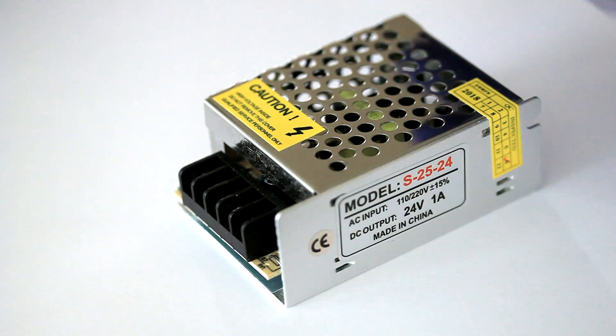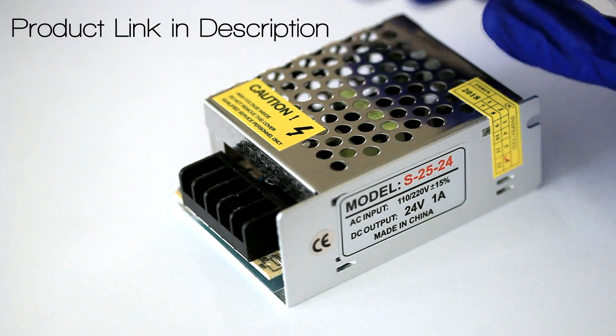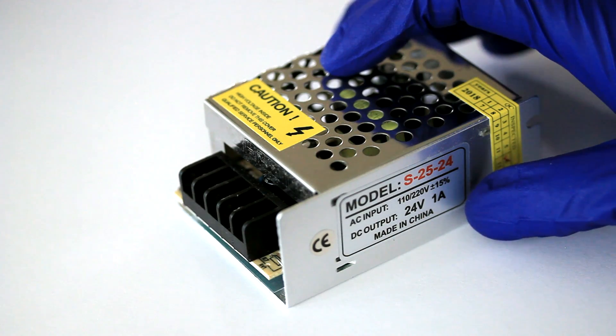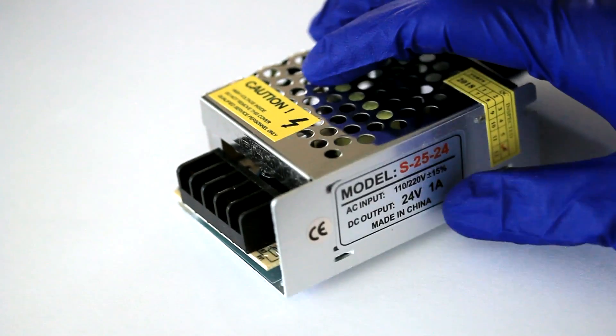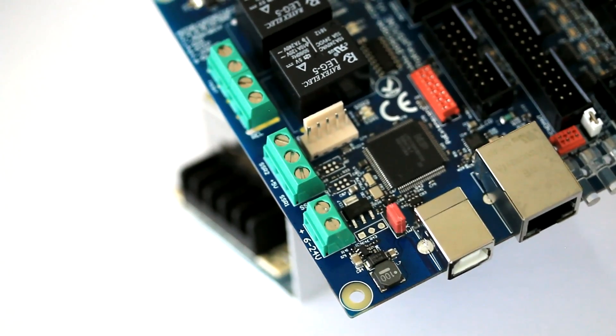This is a Build Your CNC product video introducing the 24V digital level power supply. This 24V power supply will allow a 1A draw and is typically used on interfaces like the POKEYS 57CNC interface